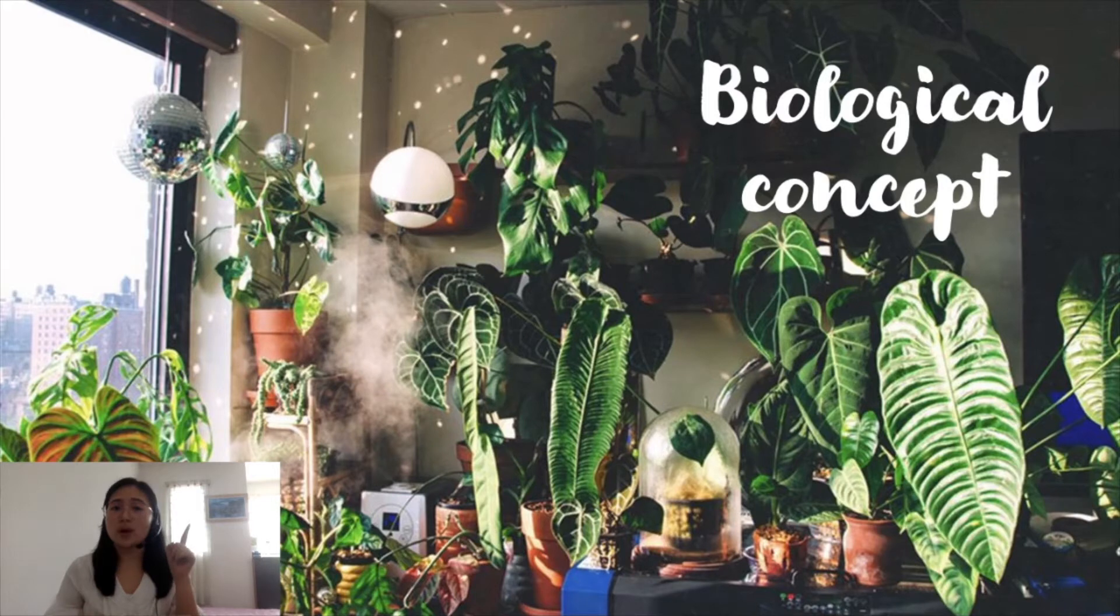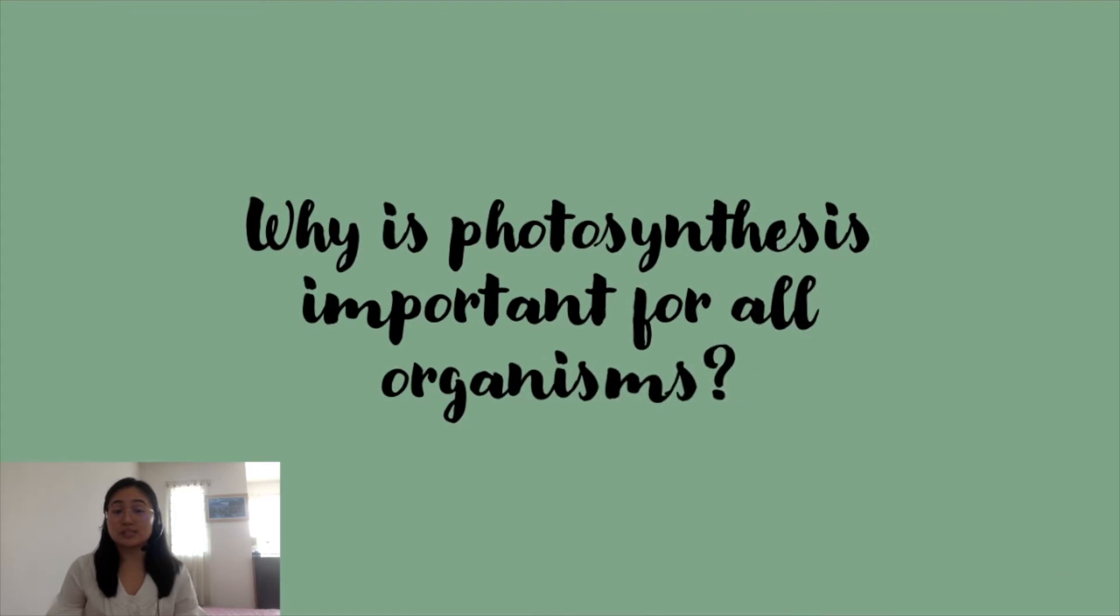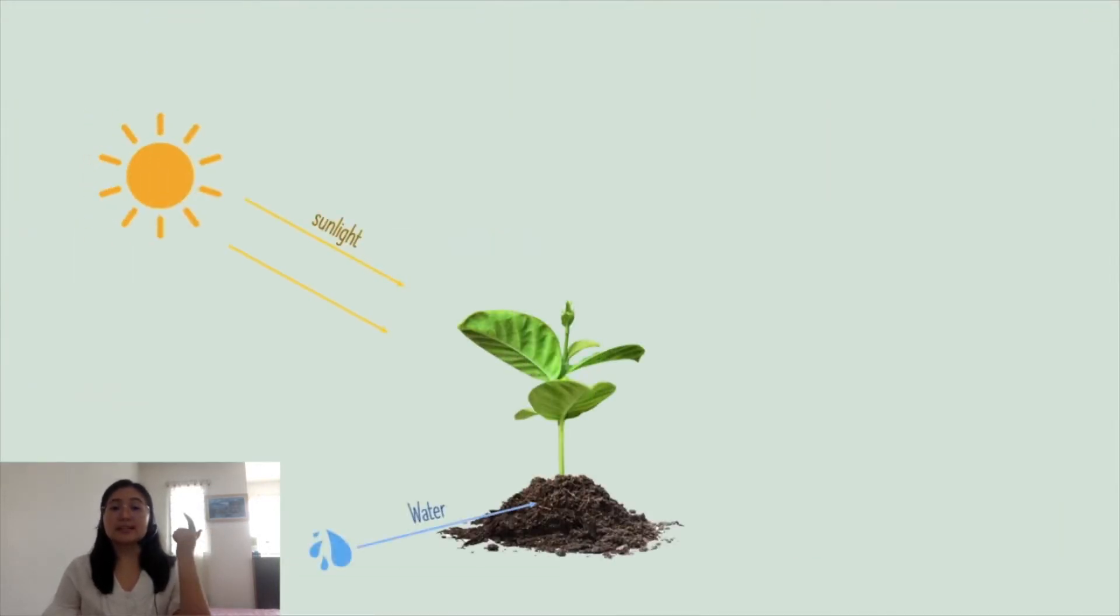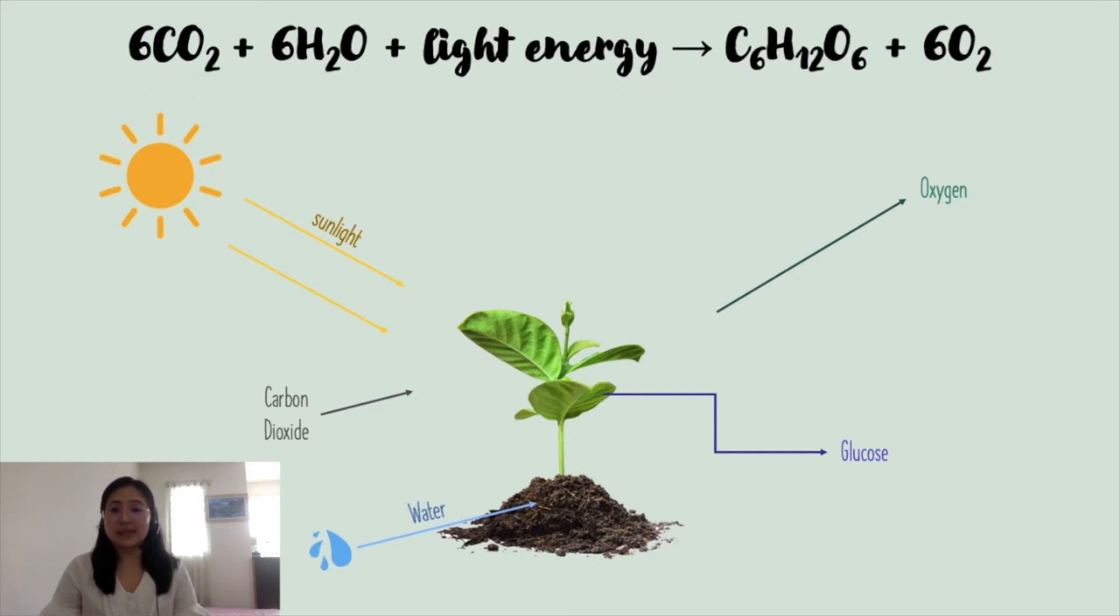I believe most of you is aware about what photosynthesis is. Yet, do you know why photosynthesis is important for all organisms? Laura Brenner once stated in 2019, Photosynthesis is the main source to produce oxygen in atmosphere. Plants use sunlight, water and carbon dioxide from the atmospheric air to produce energy in the form of glucose molecules that will be stored in the plants. Oxygen gas will also be produced as a by-product. Hence, photosynthesis has to be carried out to ensure the earth has an oxygen-rich atmosphere for all organisms to live.